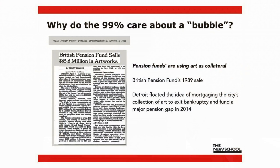So why do we care? We're not people who buy fancy artworks. But I've found evidence that the art market is being used as collateral for pension funds. The first time this became evident was in 1989, when the British Pension Fund for railroad workers sold $65.6 million worth of art to fund a pension gap. More recently, Detroit floated the idea of mortgaging their city's collection to exit bankruptcy, which was primarily an issue of a major pension gap.